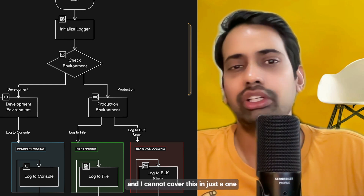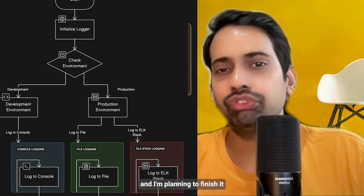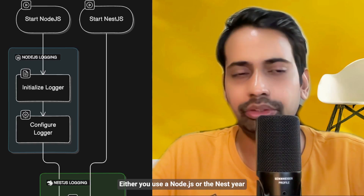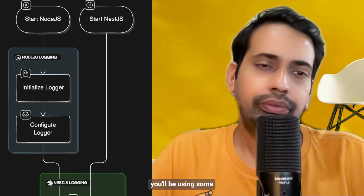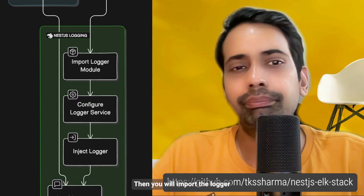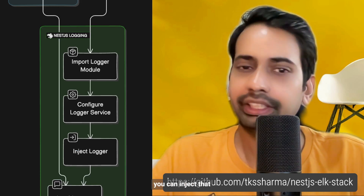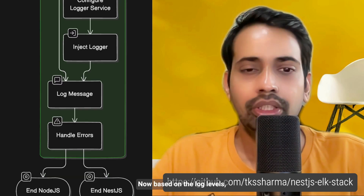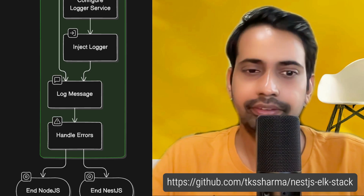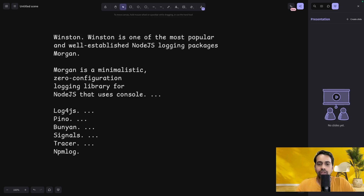Because this is a series, we'll keep covering these topics and aim to finish as soon as possible. When it comes to logging, it's generally the same whether you use Node.js or NestJS: you use a logging library like Winston, initialize and configure the logger, then import the logger module, configure the logger service, inject it into any module, and write log messages based on log levels while handling errors.